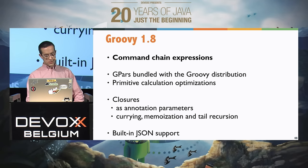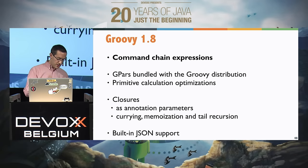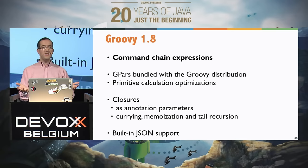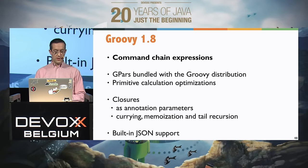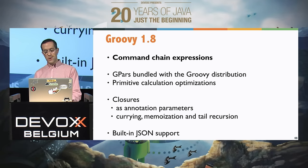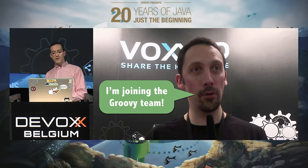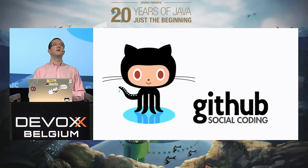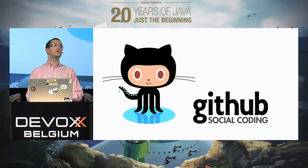Groovy 1.8 also brought more tweaks to Groovy closures and built-in JSON support. Since the beginning of the project we had great XML support, but these days most web APIs prefer JSON over XML, so we added JSON support as well. My friend Cédric Champeau joined the Groovy team, and we moved the project to GitHub — before that, sources were on the Codehaus repository.